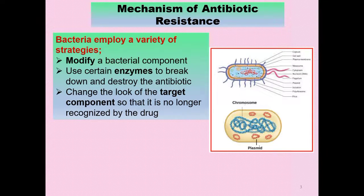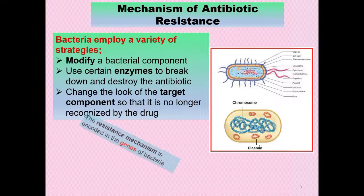As we know, antibiotics can target different components. Some antibiotics target the cell wall, some target the cell membrane, and some antibiotics target the genomic DNA of the bacteria. The bacteria can change the target component so that it is no longer recognized by the antibiotics.